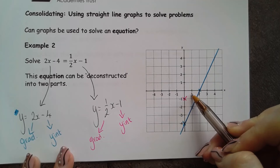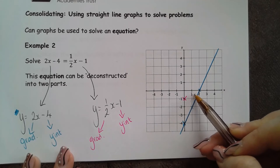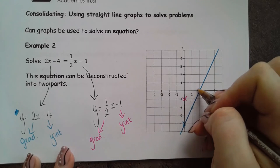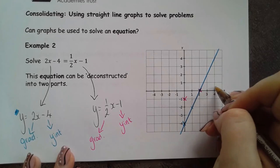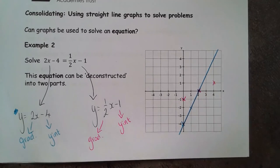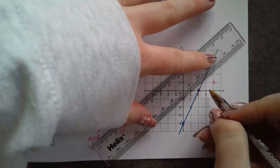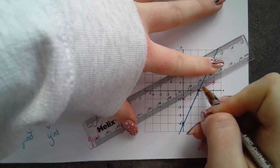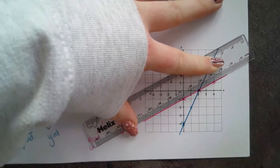This is slightly more difficult to draw because for every one across I need to go half up. That's not particularly accurate because of our scale. So if I go one across and another half up, I end up for every two across going a whole one up. So my line should look something like this.